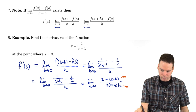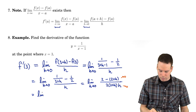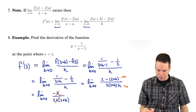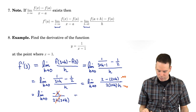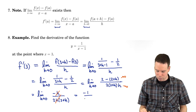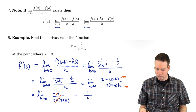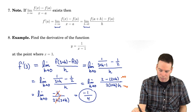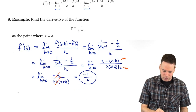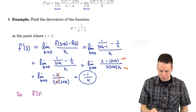Since those 2's cancel off, this reduces to negative h over 2(2 + h) times h. Now the factors of h cancel, and we're left with negative 1 over 2(2 + h). There's no longer an h in the denominator causing a problem, so we can evaluate the limit by plugging in h = 0: negative 1 over 2 times 2, which is 4. So f prime of 3 equals negative 1 quarter.